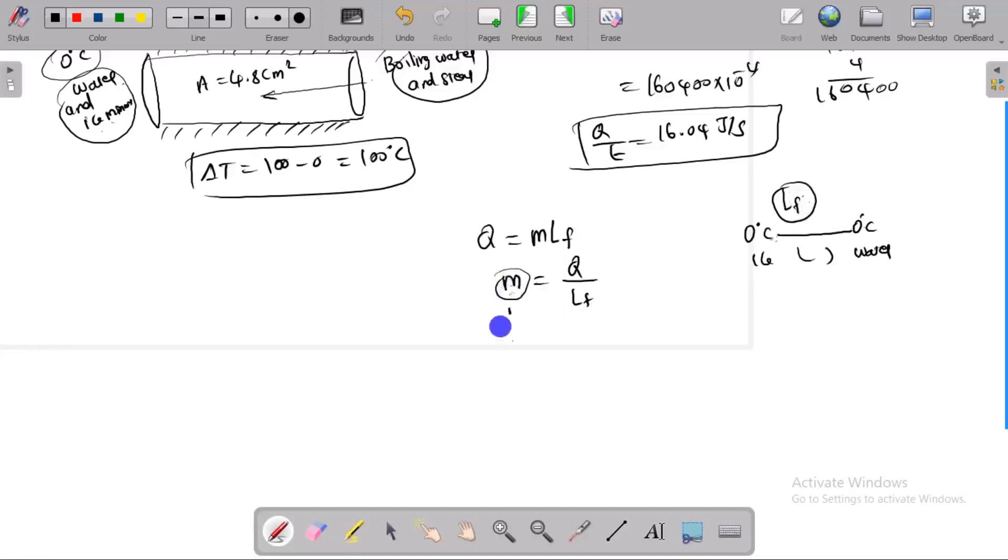dm/dt, heat transfer with respect to time. dQ/dt in front of 1 by Lf. dQ/dt is given, 16.04. Lf, latent heat of fusion, joules per second.